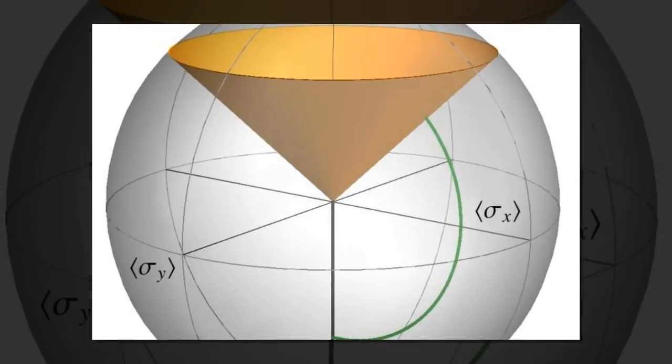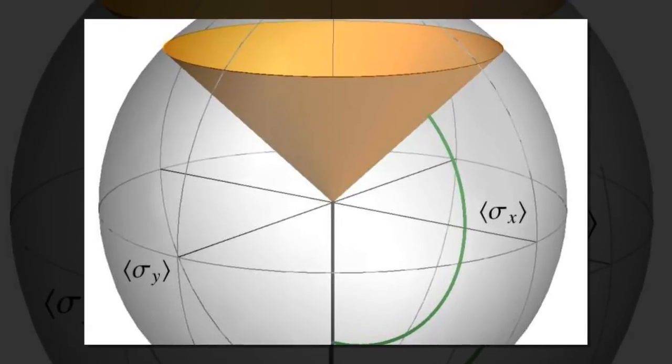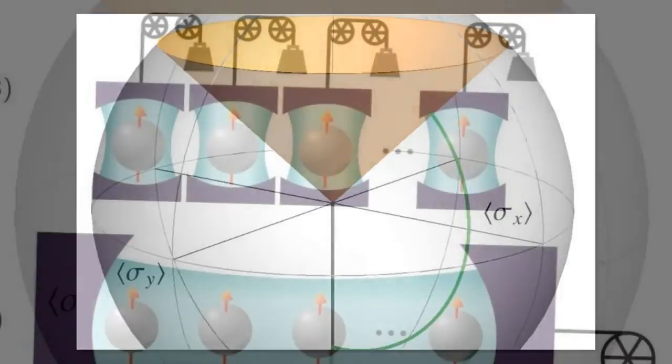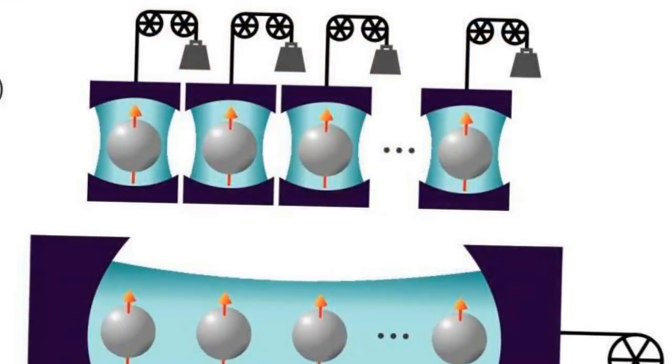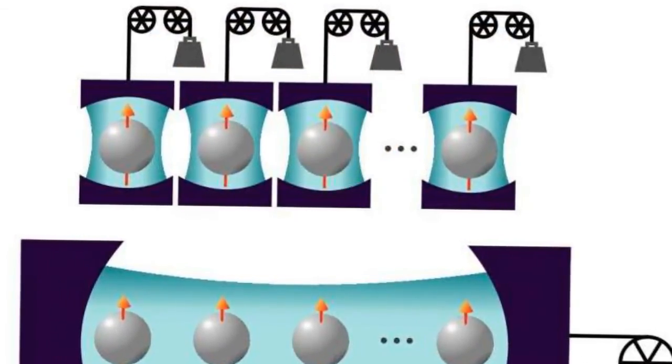In a quantum battery, the two states represent different energy levels. Charging a quantum battery means changing a qubit's state from a lower energy level to a higher energy level.